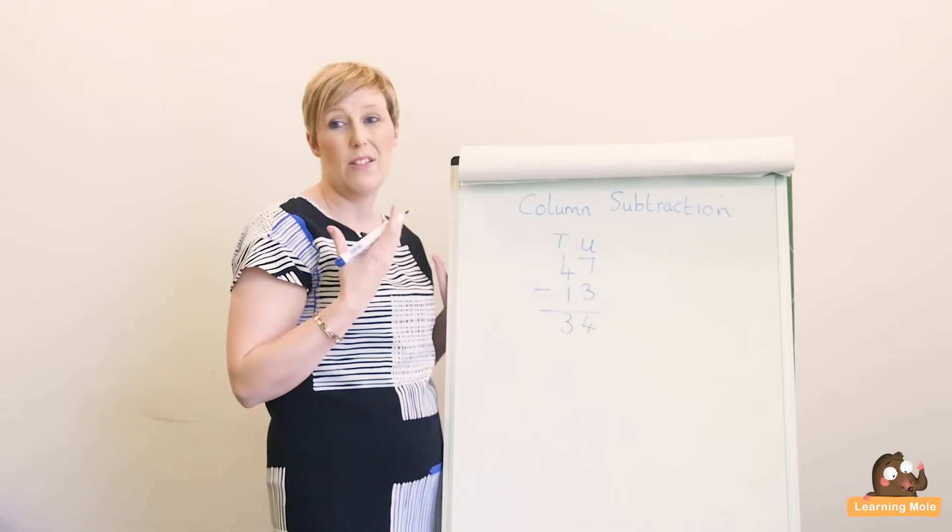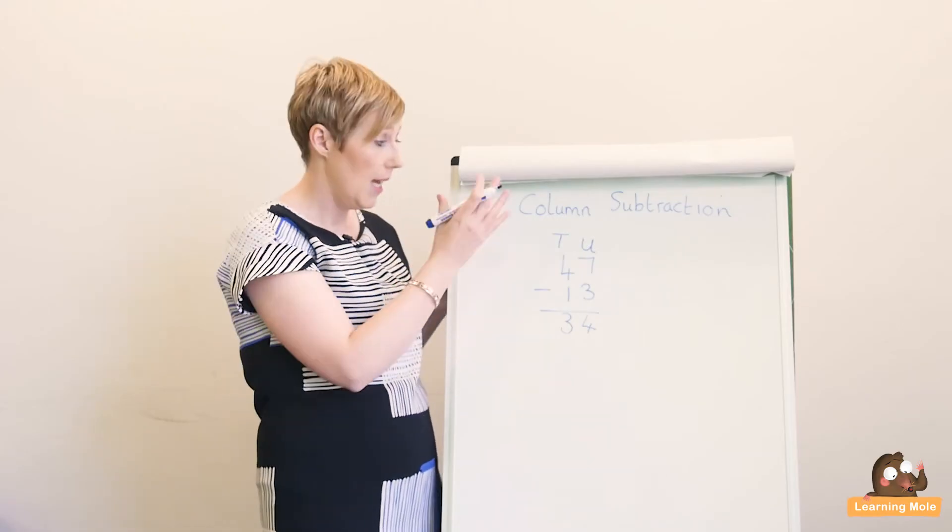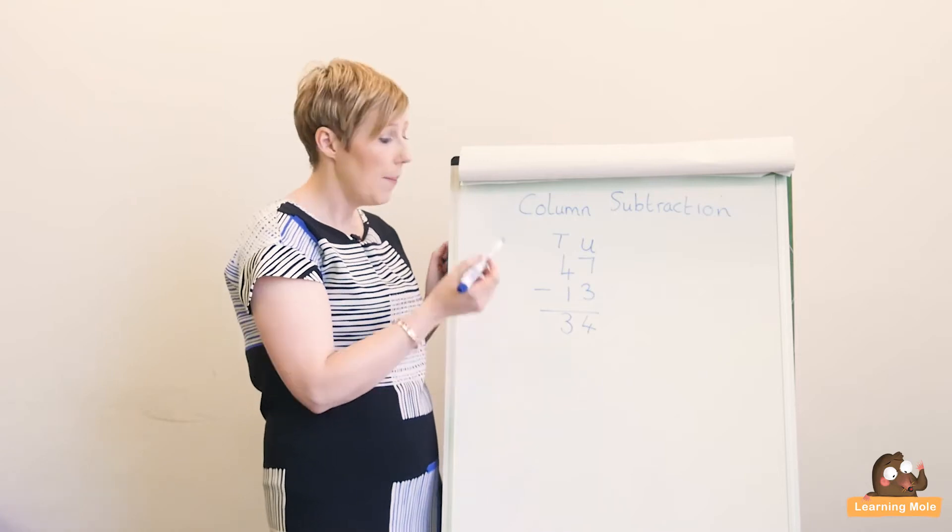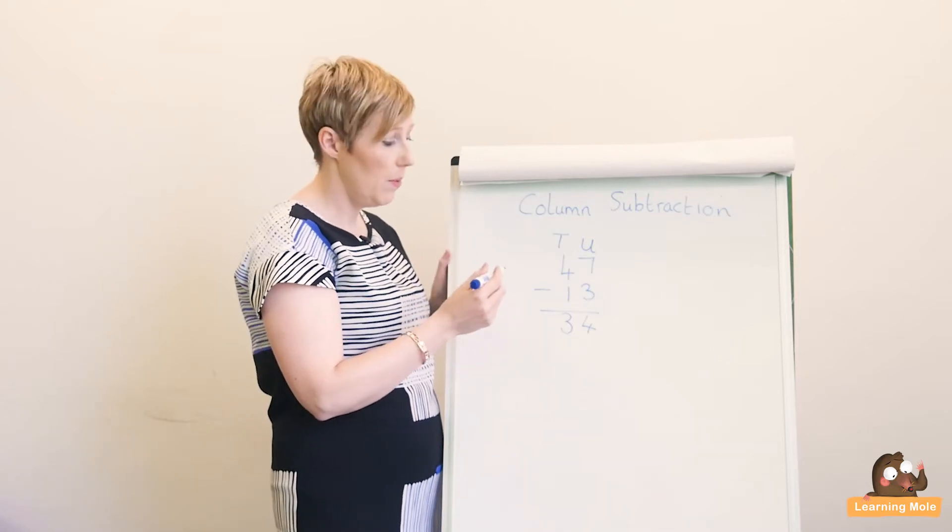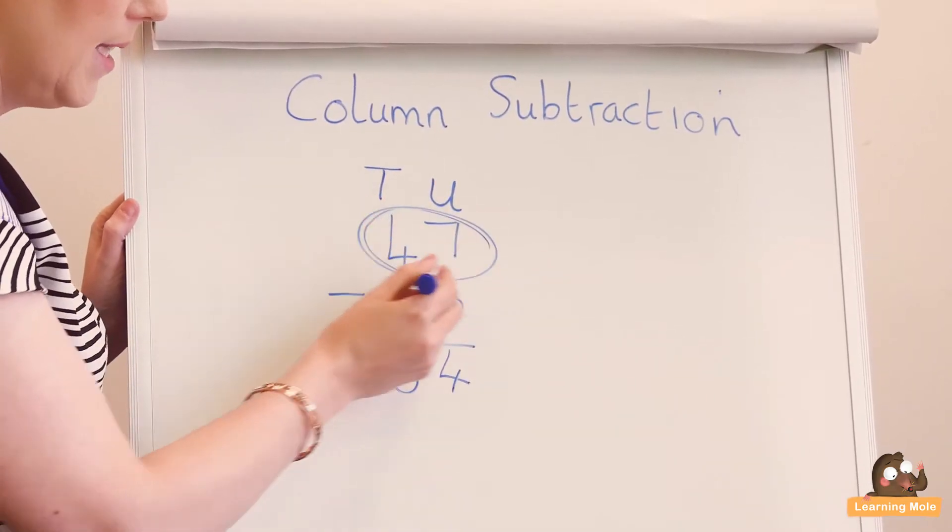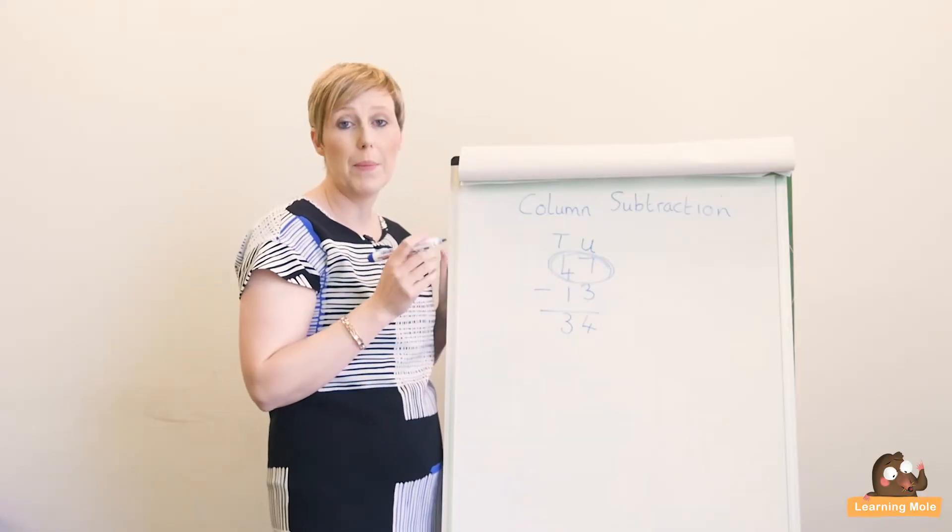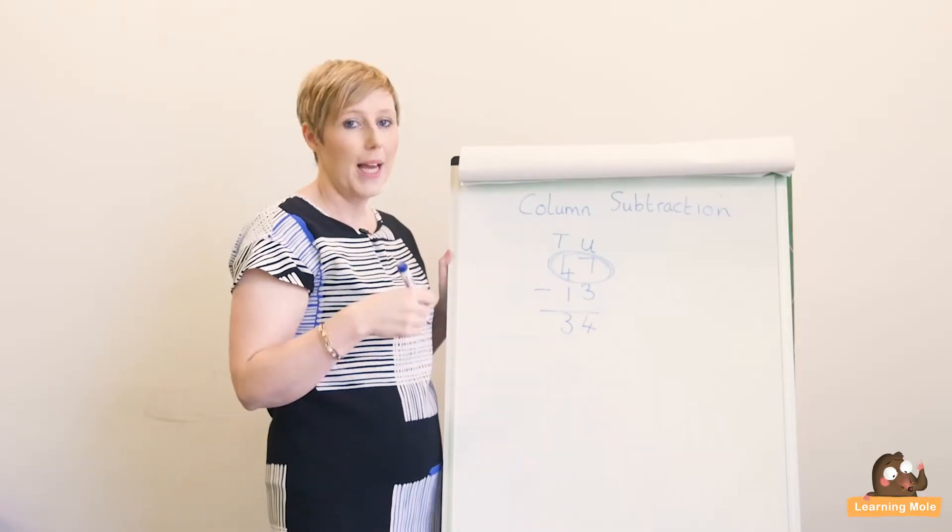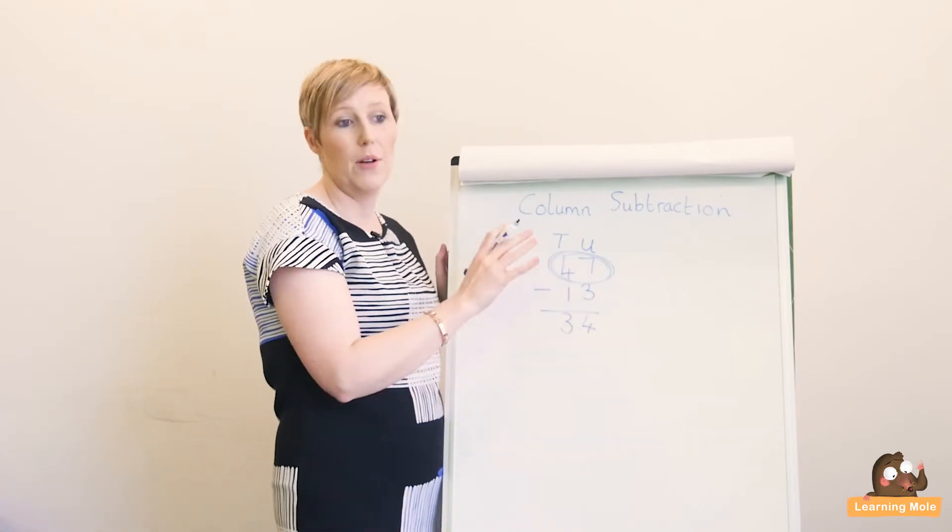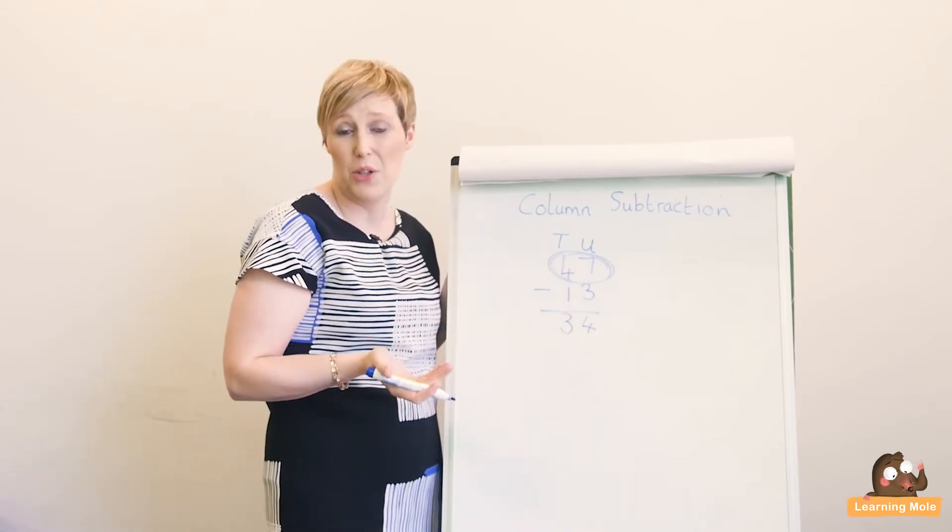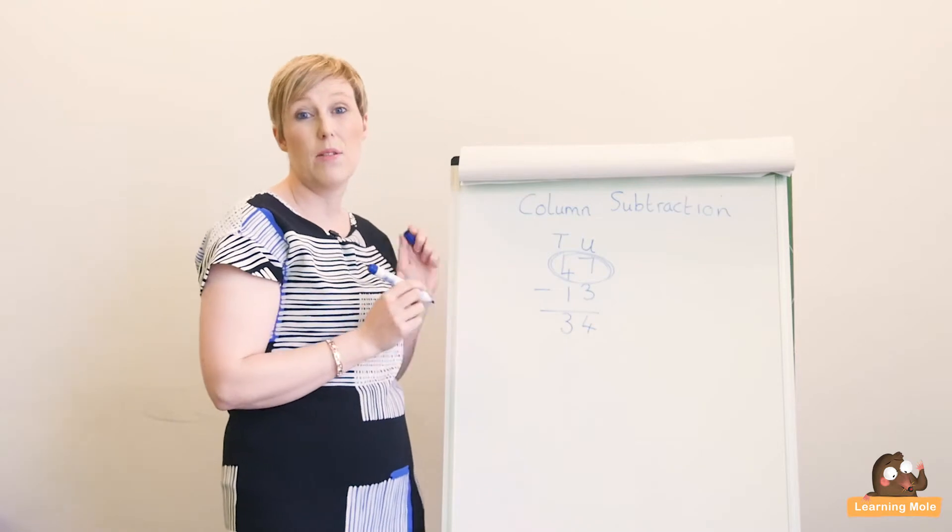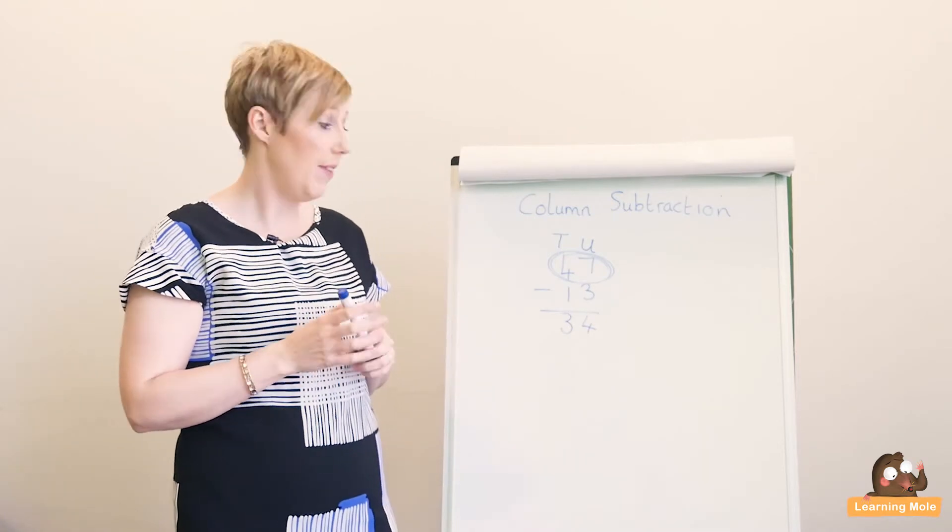That's a really simple, basic column subtraction. My biggest key point would be to remember that the biggest number goes on top, because children very quickly sometimes just write down the question and they have the numbers reversed, and then they wonder why they can't do it. That's basically the key point you want to pull out of this.